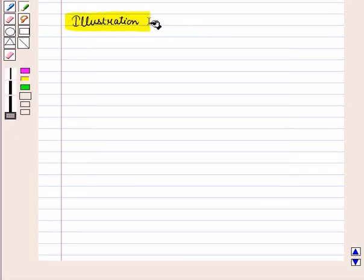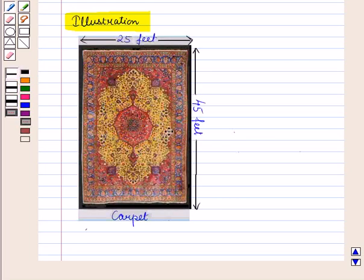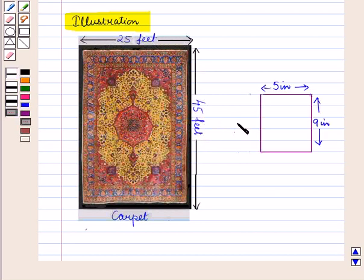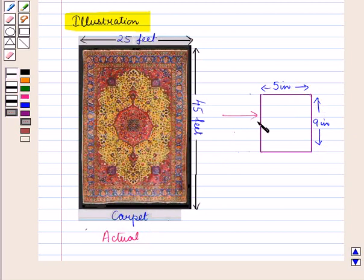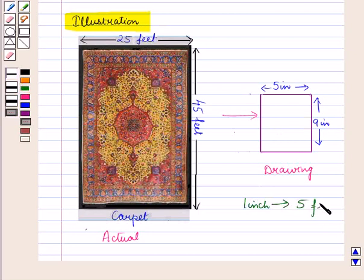Let us illustrate it with the help of an example. If we have a large carpet with length 45 feet and width 25 feet, then we can make a similar carpet on paper with length equal to 9 inches and width equal to 5 inches. So here this is the actual carpet, and this is the drawing of the carpet, where 1 inch on the drawing represents 5 feet.